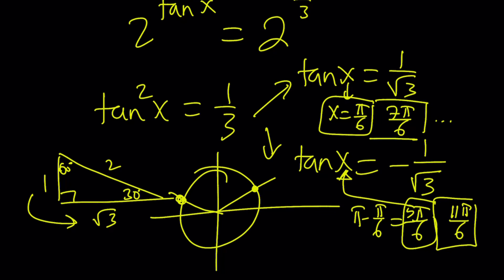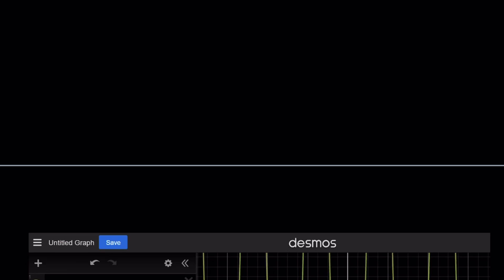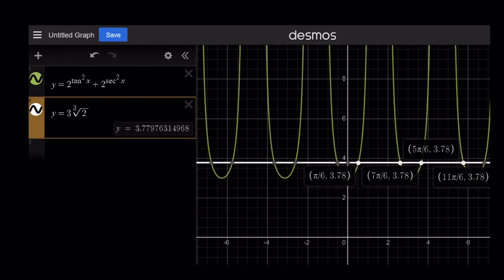Let's go ahead and take a look at the graph, and we'll finish up with that. So I graphed this function for you, 2 to the power of tangent squared x plus 2 to the power of secant squared x, which is kind of like a parabola, but it's not a parabola, and the intersection with the horizontal line y equals 3 times the cube root of 2, which obviously gives you all the solutions. So these are all going to be the intersection points, positive and negative are going to give you the solutions.